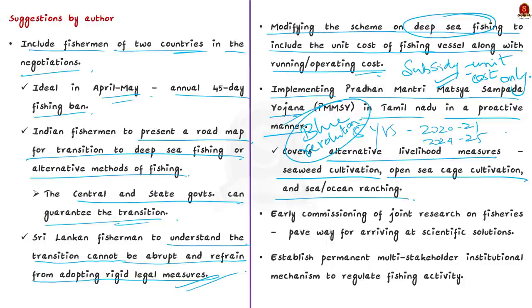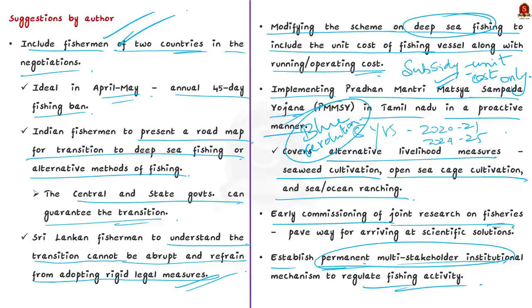Next suggestion is early commissioning of joint research on fisheries, which was agreed in joint working group meeting. It will help cover the issue faced by fishermen and the adverse impact of bottom trawling. The research will pave way for scientific solutions. The final suggestion is establishing an institutional mechanism to regulate fishing activity in the region. By adopting these suggestions, author recommends solving the fisherman issue in a more diplomatic and humanitarian manner.